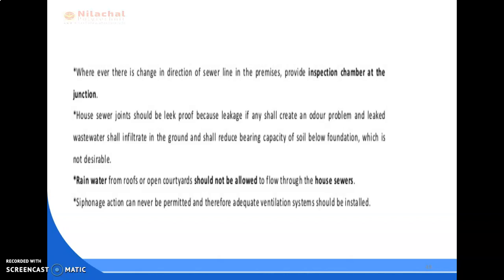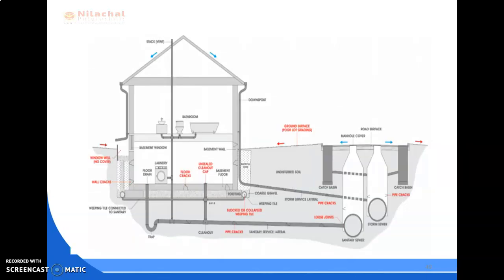The lateral sewers should be laid at a proper gradient so that they will develop self-cleansing velocity. The materials of sewers should comply with standard requirements; they should be non-absorbent, and earth cushioning should be provided to protect them from external loads. These are the basic principles to follow during construction of a house drainage system.